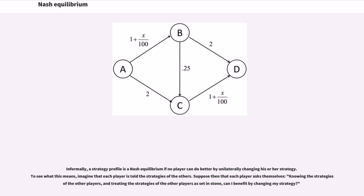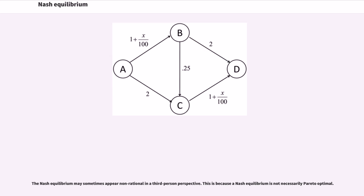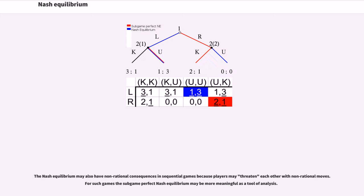If any player could answer yes, then that set of strategies is not a Nash Equilibrium. But if every player prefers not to switch, then the strategy profile is a Nash Equilibrium. Thus, each strategy in a Nash Equilibrium is a best response to all other strategies in that Equilibrium. The Nash Equilibrium may sometimes appear non-rational in a third-person perspective, because a Nash Equilibrium is not necessarily Pareto optimal. The Nash Equilibrium may also have non-rational consequences in sequential games because players may threaten each other with non-rational moves. For such games the sub-game perfect Nash Equilibrium may be more meaningful as a tool of analysis.